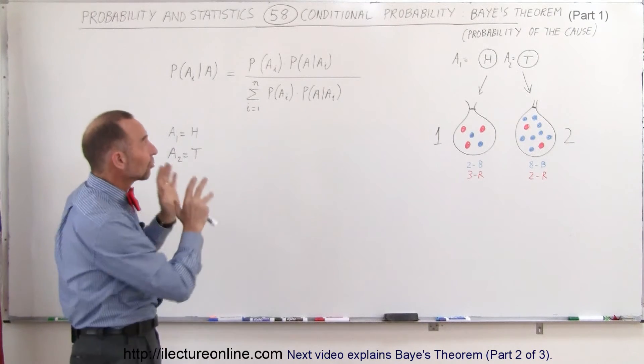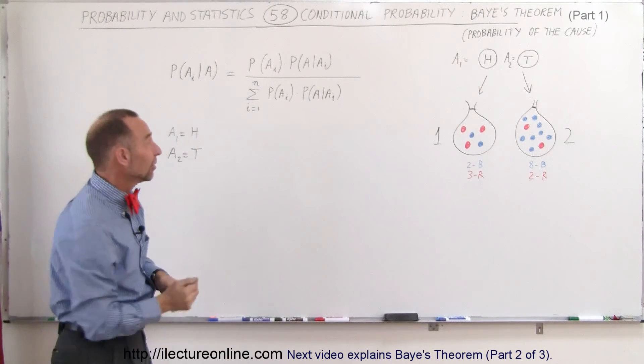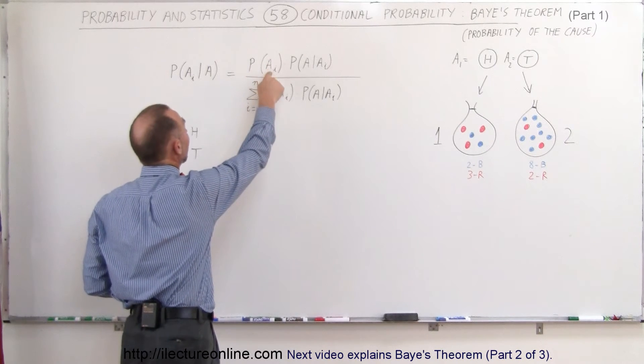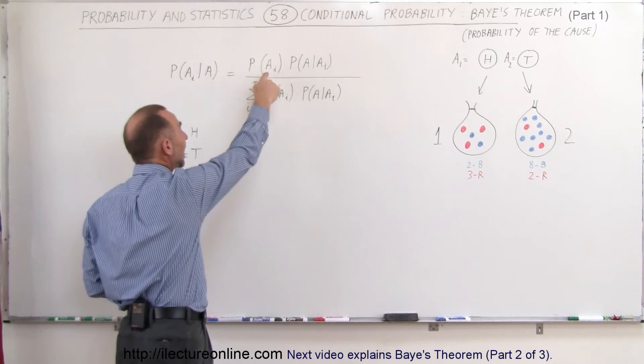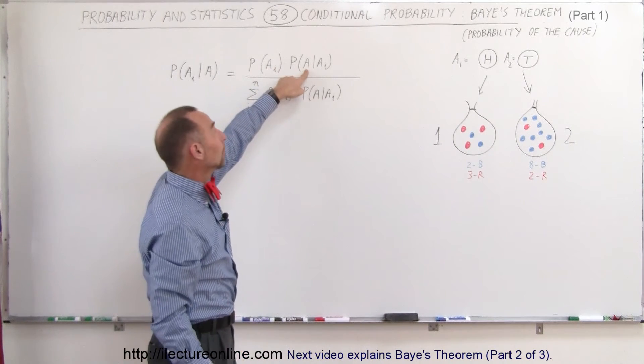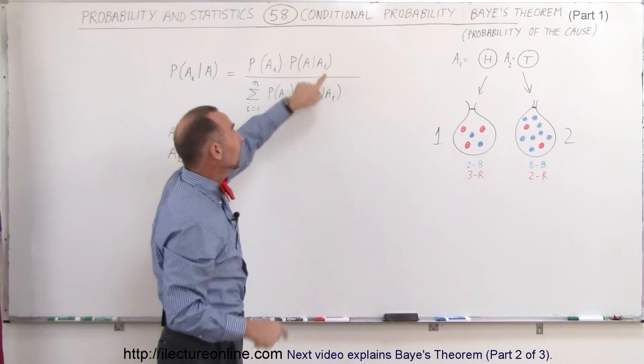So, now that we understand that, let's go look back at the theory and see if it makes a little bit more sense. So, that means that is equal to the probability that, for example, we threw heads times the probability that we pulled a red marble, provided that we threw heads,